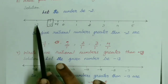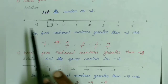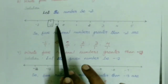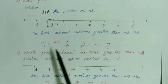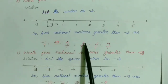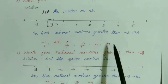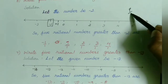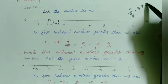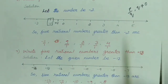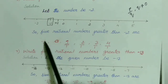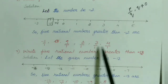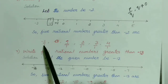When we walk towards the left-hand side, values are in decreasing order. So everything to the right of minus 2 is greater than minus 2, and everything to the left is smaller. Since we need 5 rational numbers greater than minus 2, I can write minus 1, 0, 1, 2, 3. To express them as rational numbers in the form p/q where q is not equal to 0, simply write them as minus 1/1, 0/1, 1/1, 2/1, and 3/1.